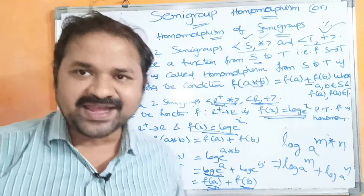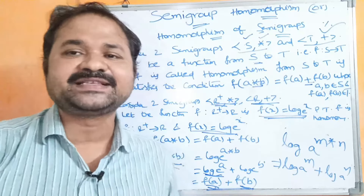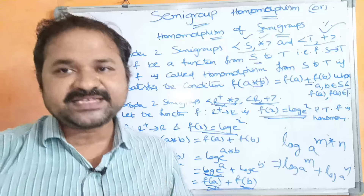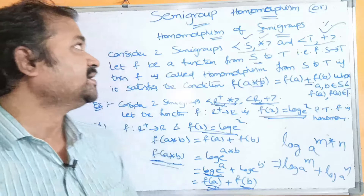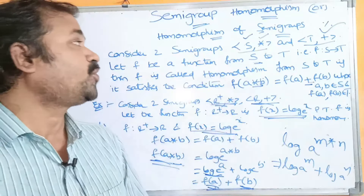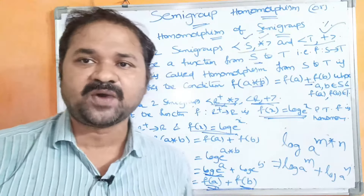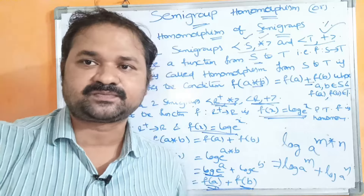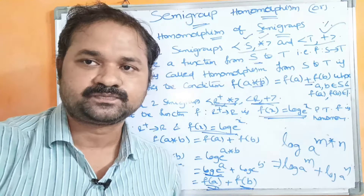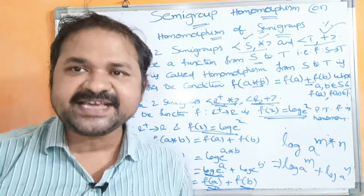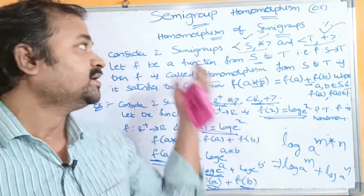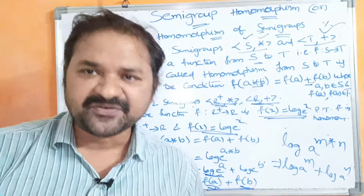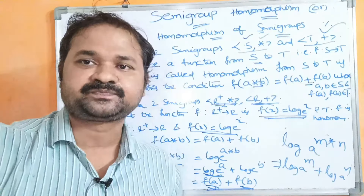Since F(a ★ b) = F(a) + F(b) is satisfied, we can conclude that F is a homomorphism. This completes the discussion on semigroup homomorphism. Thank you.